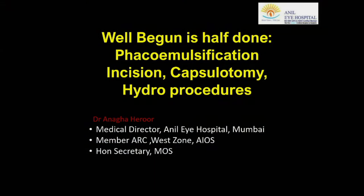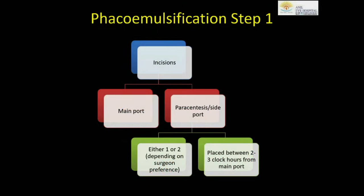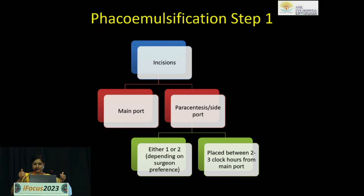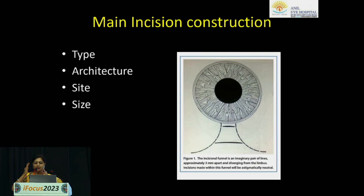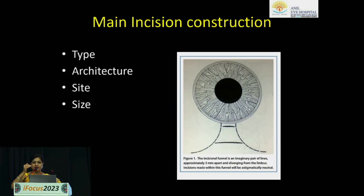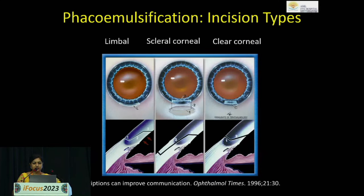Good morning. We'll be covering the initial first few steps of cataract surgery. When looking at the incision, you have the main port and the paracentesis or side ports. One or two side ports depend on the surgeon's preference and instruments used, and they are usually two to three clock hours away from the main port. There is an imaginary funnel - incisions within this funnel (3 mm at the limbus with two diverging lines) are usually astigmatically neutral. More close to the limbus induces more astigmatism; more posterior induces less astigmatism.